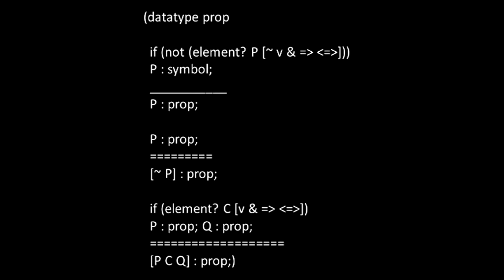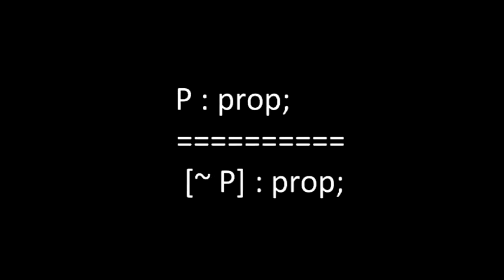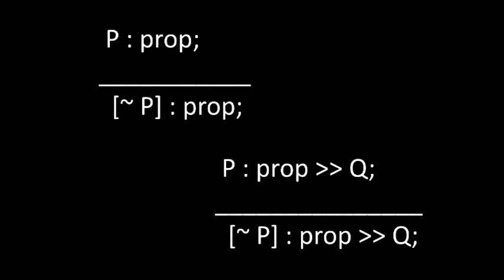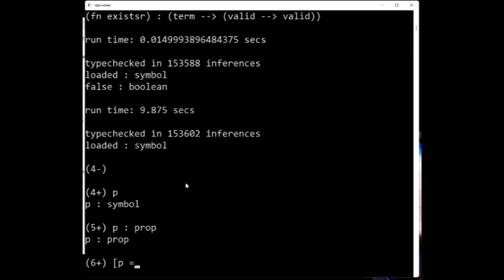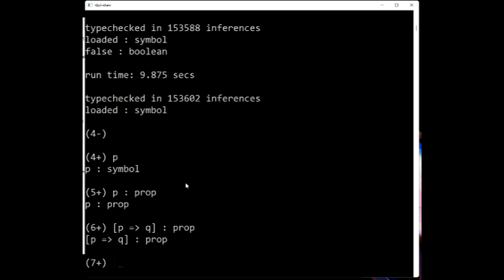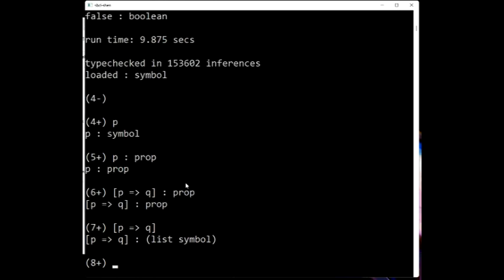The double underlines just abbreviate two rules so that this rule is just short for these two rules. Let's test these rules. This list structure, which we read as P implies Q, is overloaded. It is a prop and also a list of symbols. If we want to test to see if it is a prop, we have to enter the expression together with the type prop.